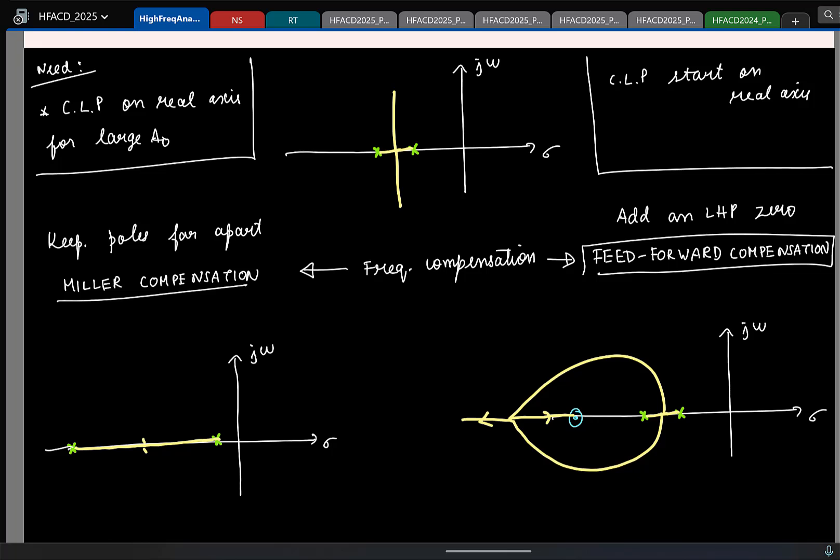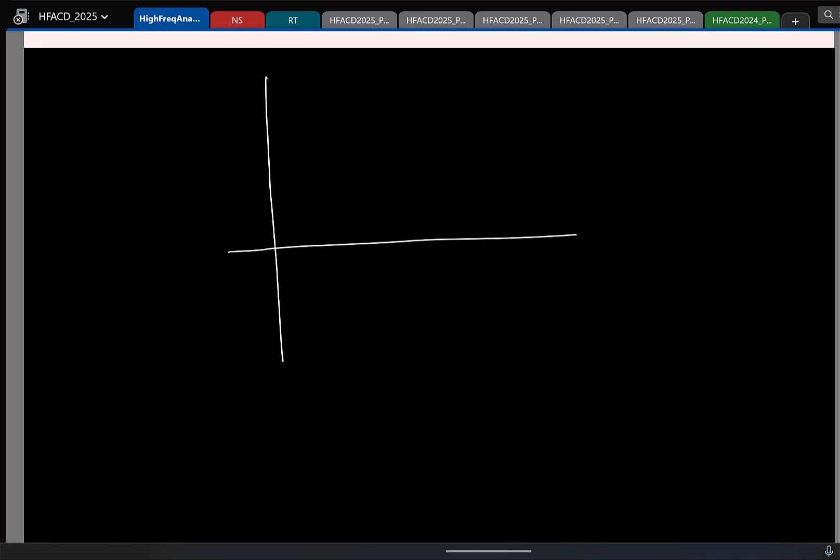So now we have seen what happens in root locus, but every time we cannot sketch root locus. So we prefer sketching Bode plot. Let us actually look at the Bode plot and see how things are. But till this point it is clear. Is it clear why we are doing this and this? The funda is I want to keep the closed loop poles on the real axis as much as possible. These are two straightforward ways in which you can do. So let us look at the Bode plot. First, I will look at the Bode plot for the second order system without any compensation. So let me sketch the loop gain. This is omega, this is magnitude of the loop gain. So I have two poles which are close enough. Let us say this is the first pole, this is the second pole.